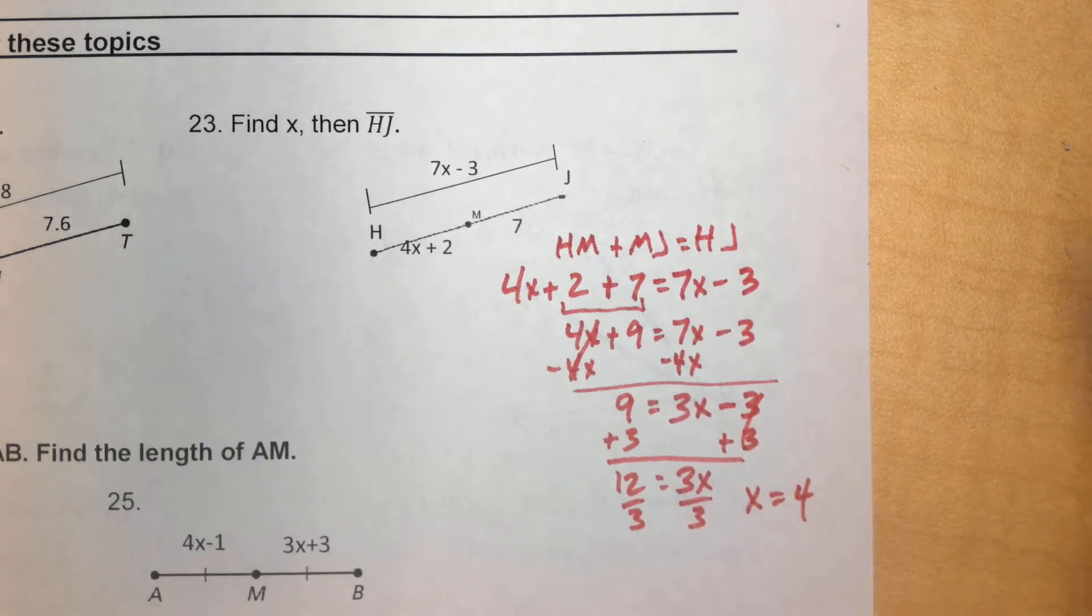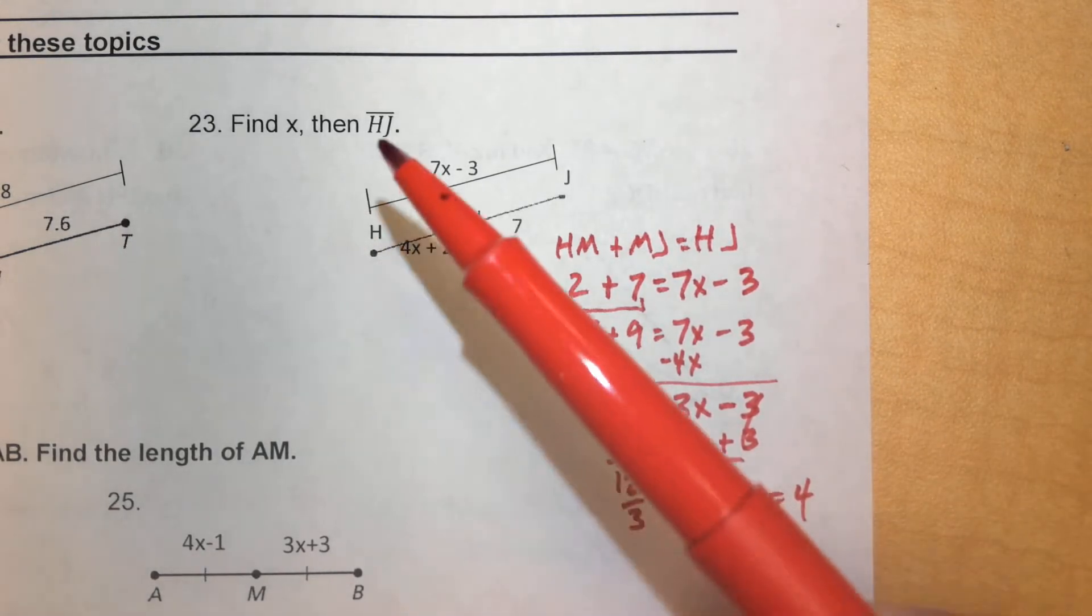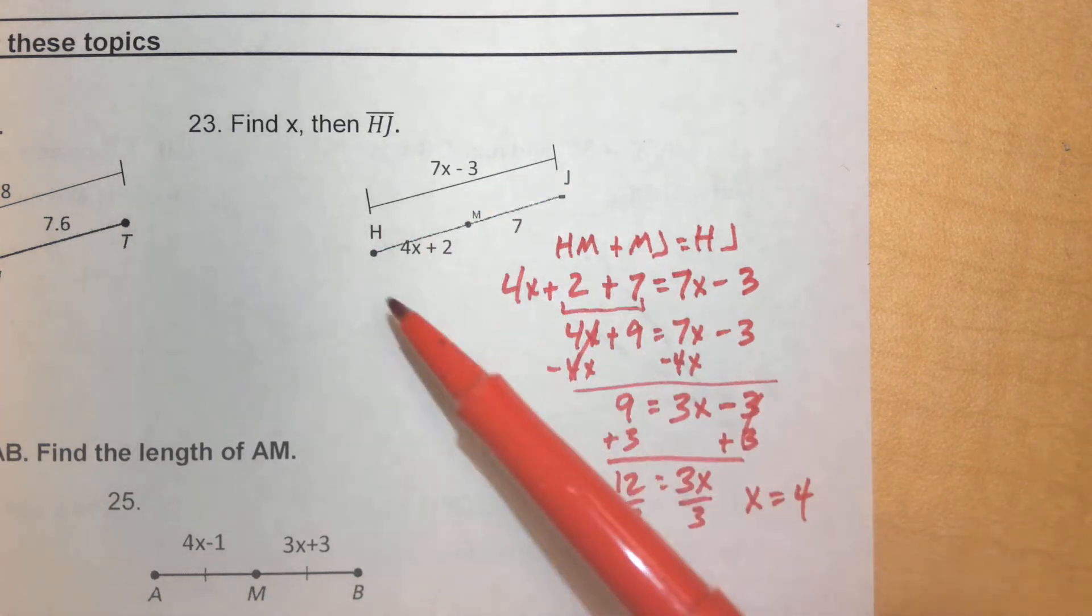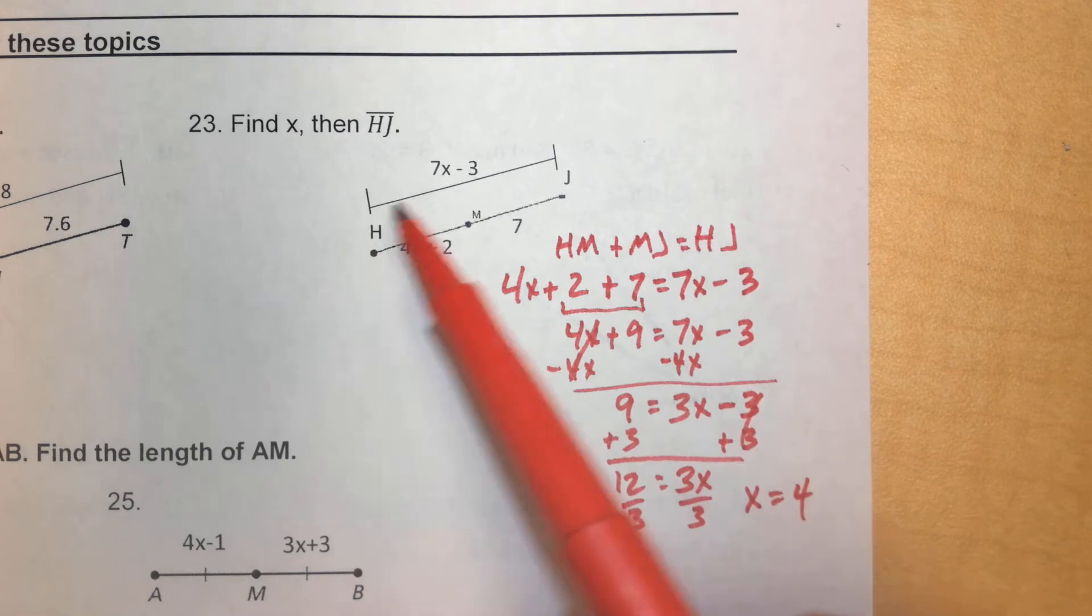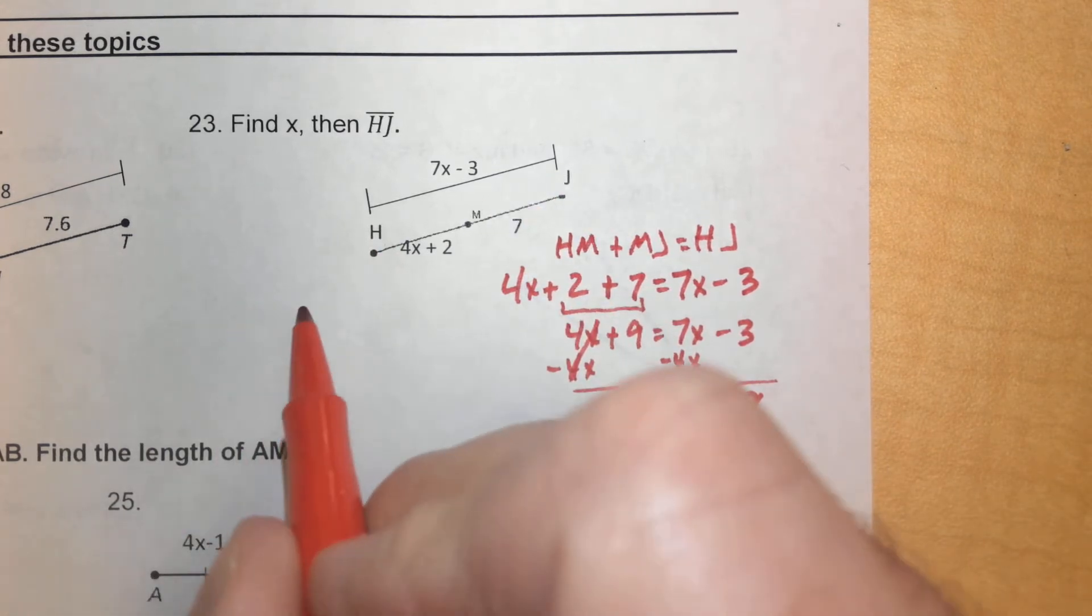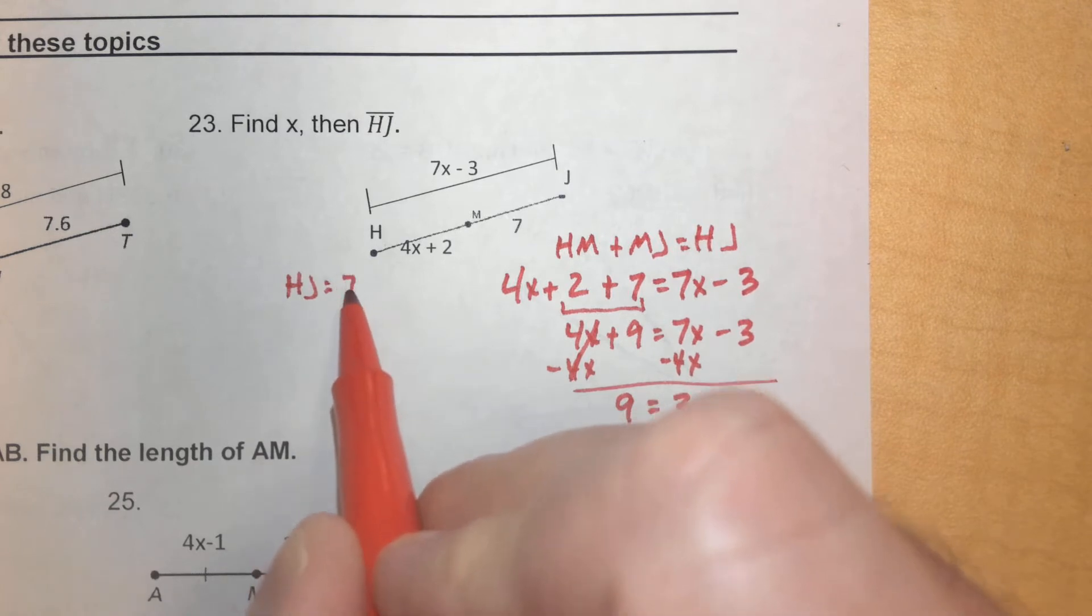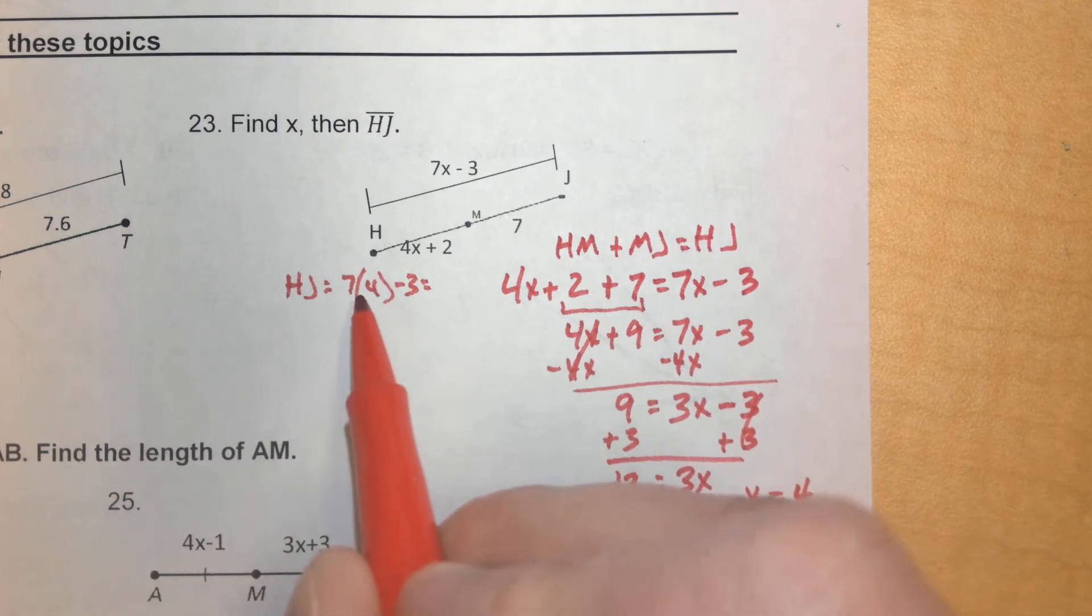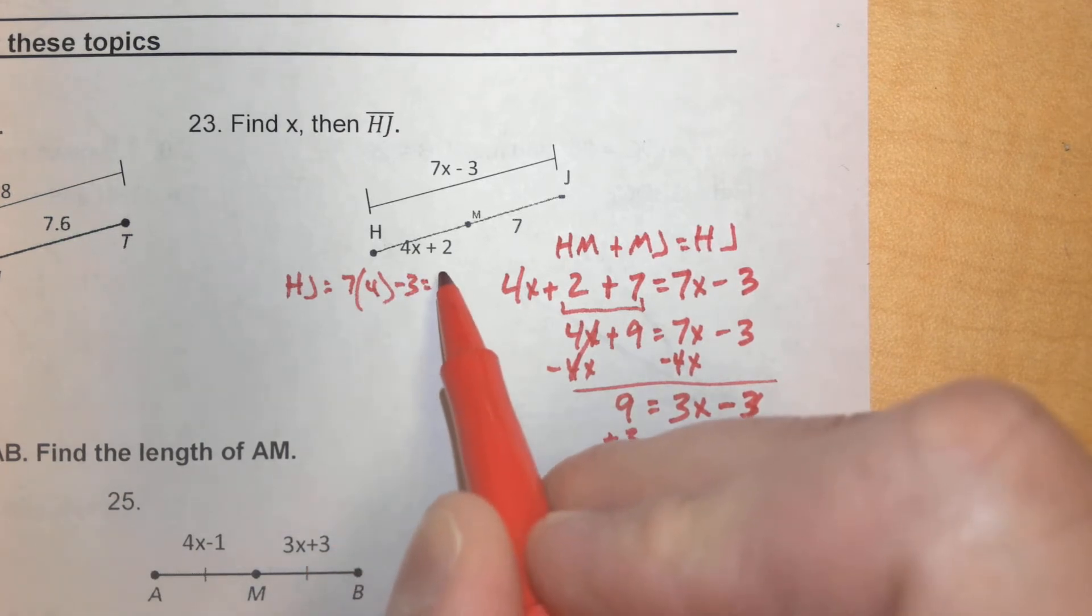Okay. Now, the question says here, find X and then find H to J. So, we want to plug this in and make sure that it actually works here. We want to find the distance from H to J. So, if we plug that in, H to J should be 7 times our X value, which is 4, minus 3. And 28 minus 3 is 25.